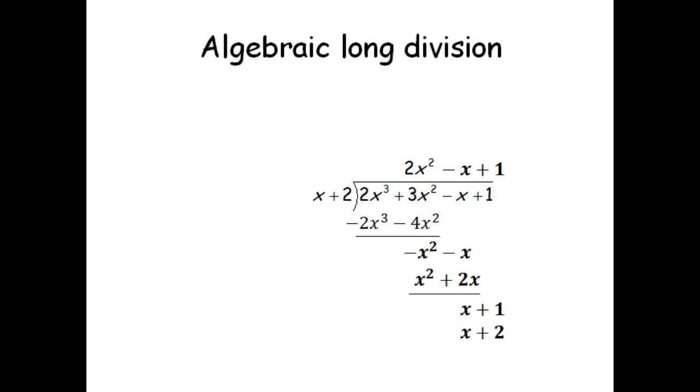Then I subtract, which means I change both of those signs. The x's cancel out. 1 minus 2 would give me a negative 1. So now we're just about done here. We know that negative 1 is going to be the last part that we have.